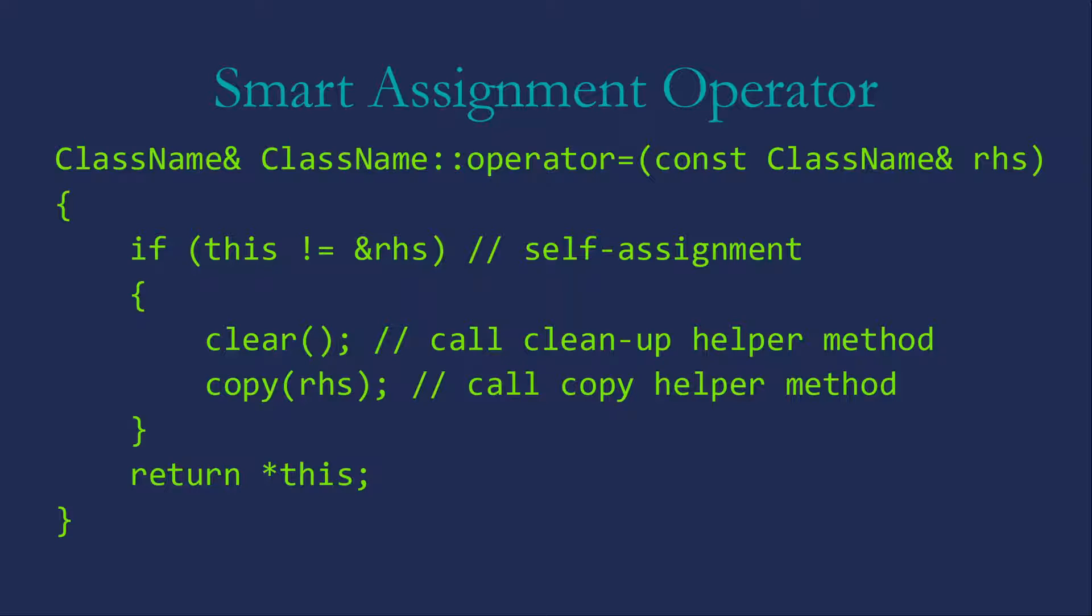Then in the function itself, we're first going to check on that self-assignment problem. Before we do anything else, we want to make sure that this is not the same as the address of the right-hand side. If it is, we don't have to do anything because these two are both pointing at the same object. And so all we need to do is return star this and we're done.